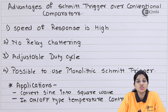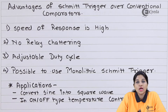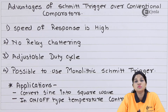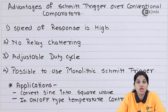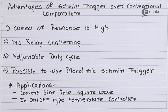The second advantage provided by Schmidt trigger is no relay chattering. As positive feedback is used, it introduces a property of hysteresis, because of which the noise immunity of the circuit is increased. As noise immunity increases, false triggering at the output due to noise at the input is reduced, so there is no relay chattering in Schmidt trigger.